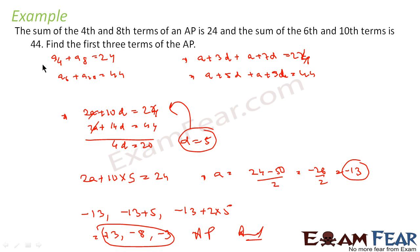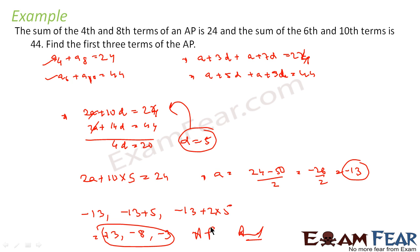What I did: I wrote the two equations — A4 plus A8 equals 24 and A6 plus A10 equals 44, as given. I solved them to get the values of a and d. Once I have a and d, I can get the first three terms very easily.